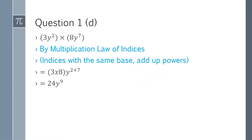Question 1d: 3y^2 multiplied by 8y^7. We apply the multiplication law of indices and add up the powers. Coefficients multiply each other: 3 × 8 = 24. For y, we add the powers: y^(2+7) = y^9. The answer is 24y^9.